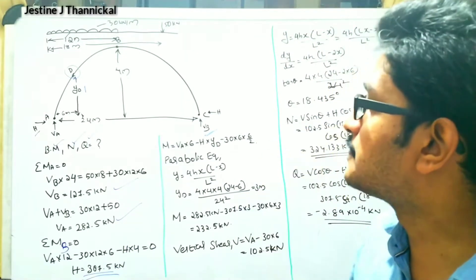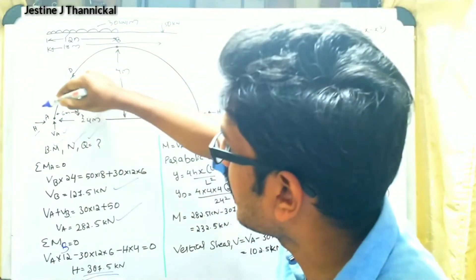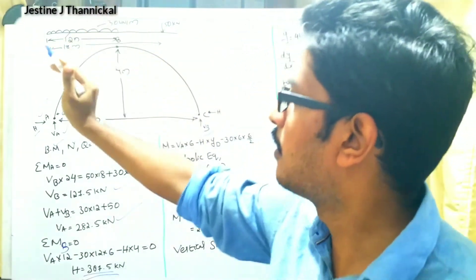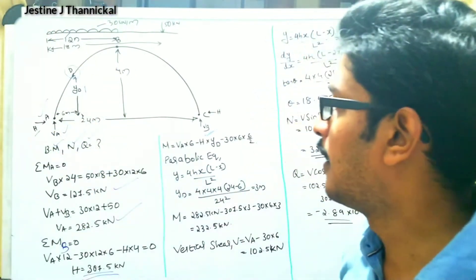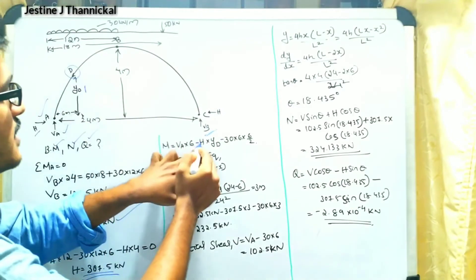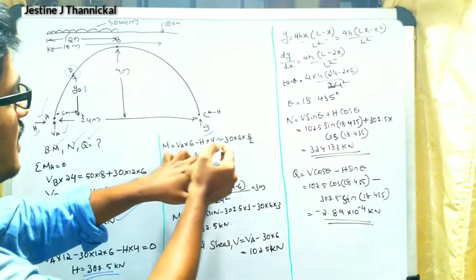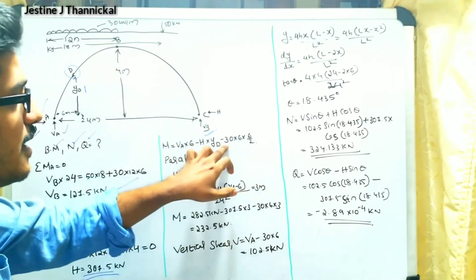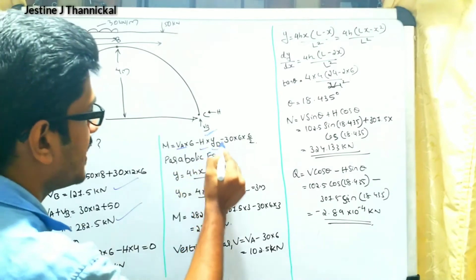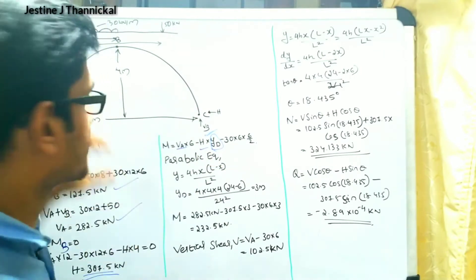Now we find the bending moment at point D. Considering the forces on the left side — VA, horizontal thrust H, and the 30 kN per meter UDL — we write: bending moment equals VA multiplied by 6, minus H multiplied by yd, minus 30 multiplied by 6 multiplied by 3. Since yd is unknown, we first need to find the vertical distance of point D using the parabolic equation.